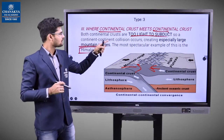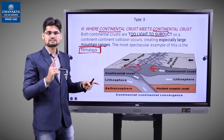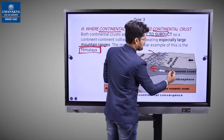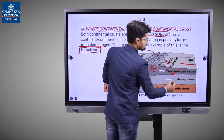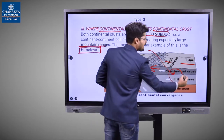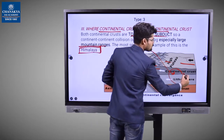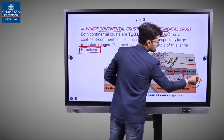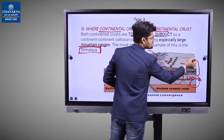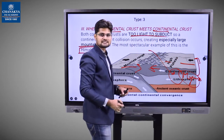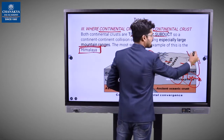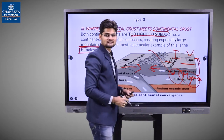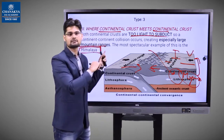Remember that subduction always leads to one layer going inside where heat and pressure cause melting. Magma is formed and comes to the surface from weakness vents, forming volcanoes, island arcs, and back-arc basins. In continental-continental collision there is no subduction.